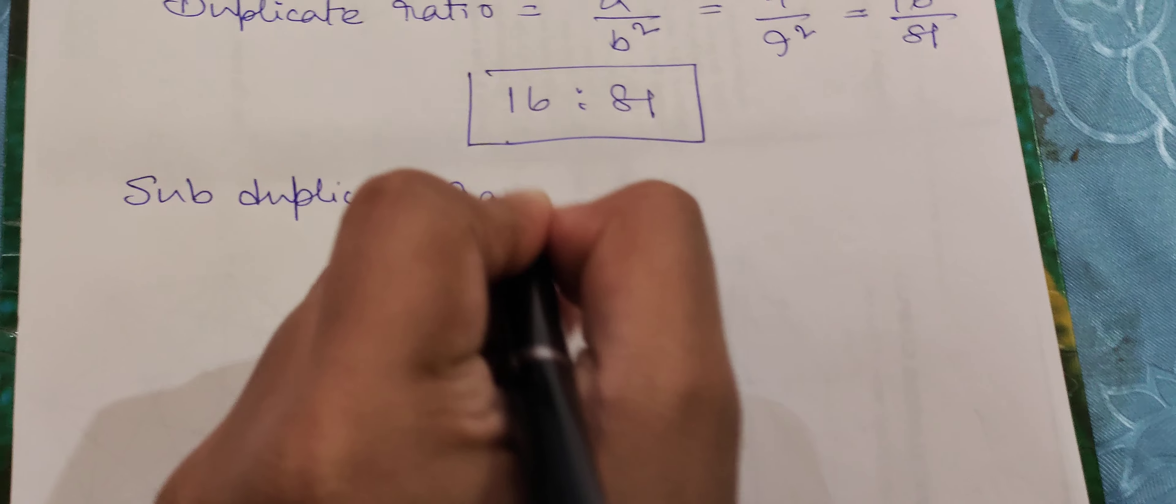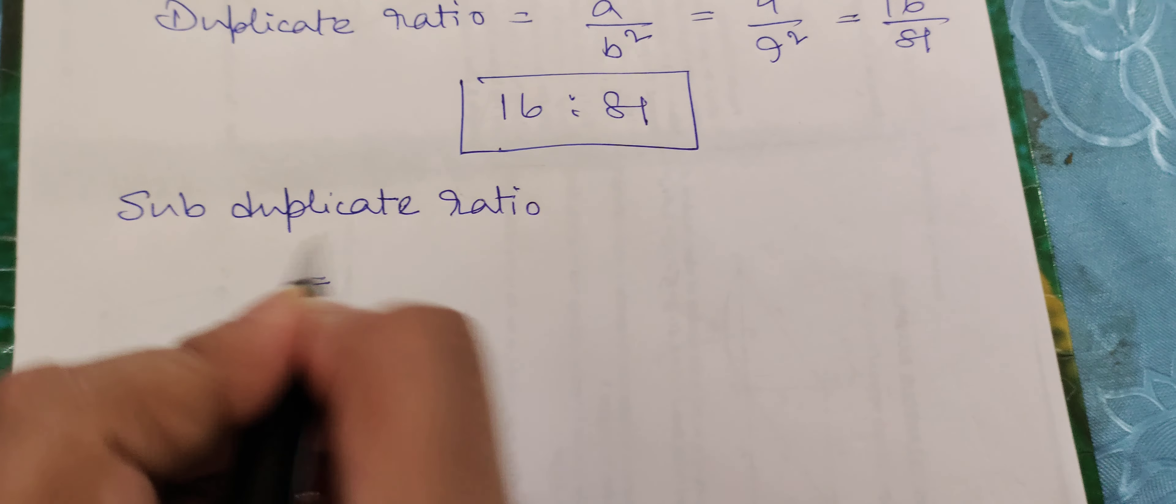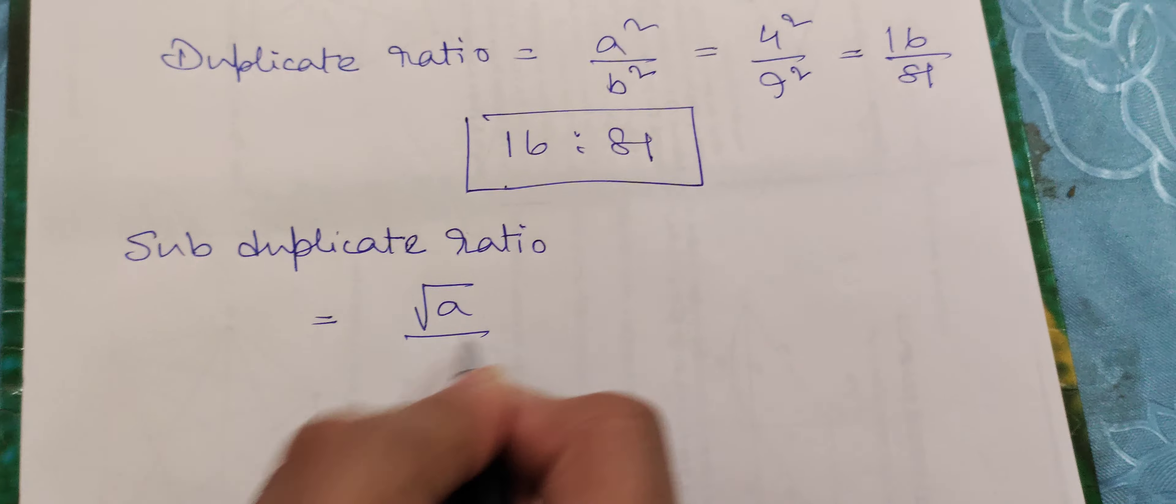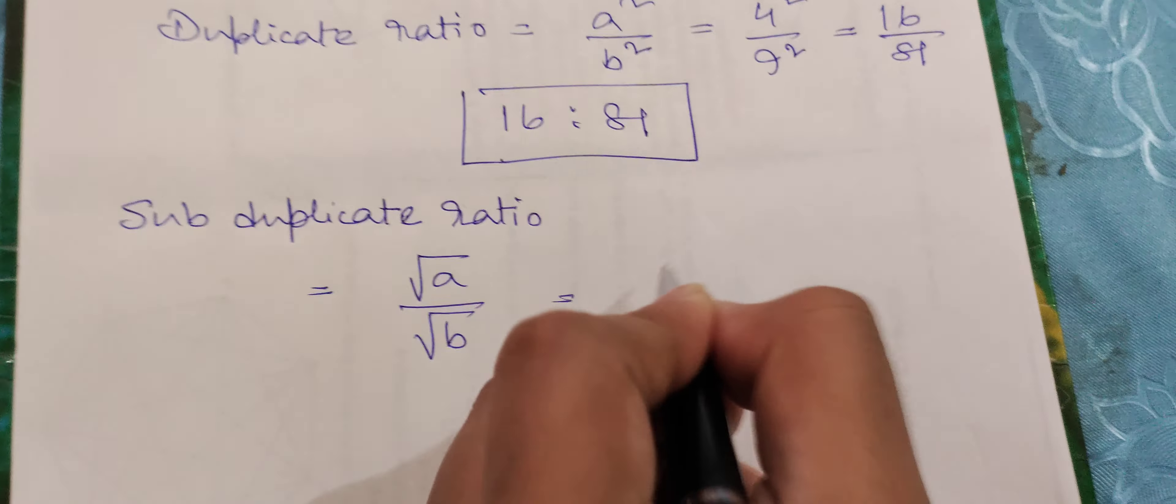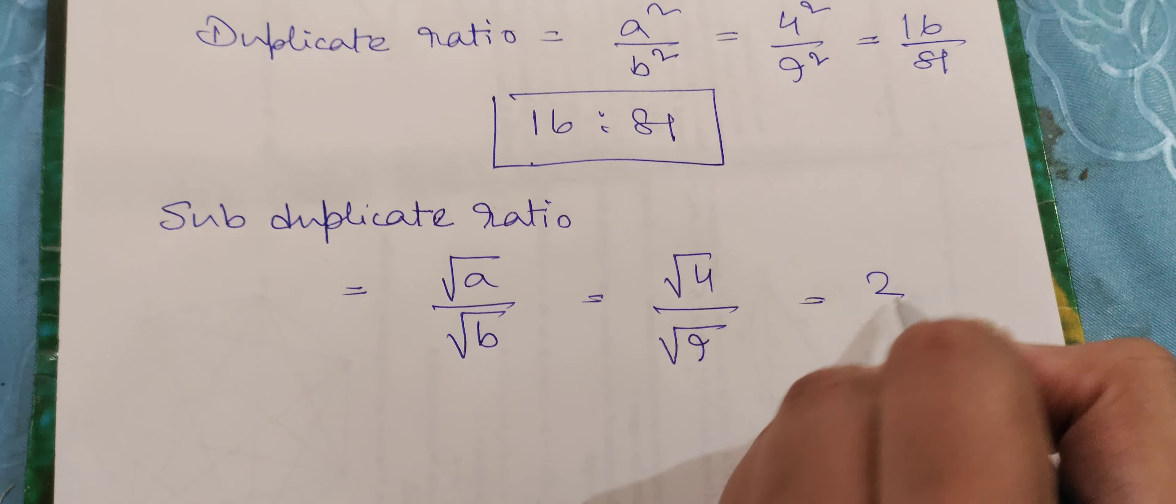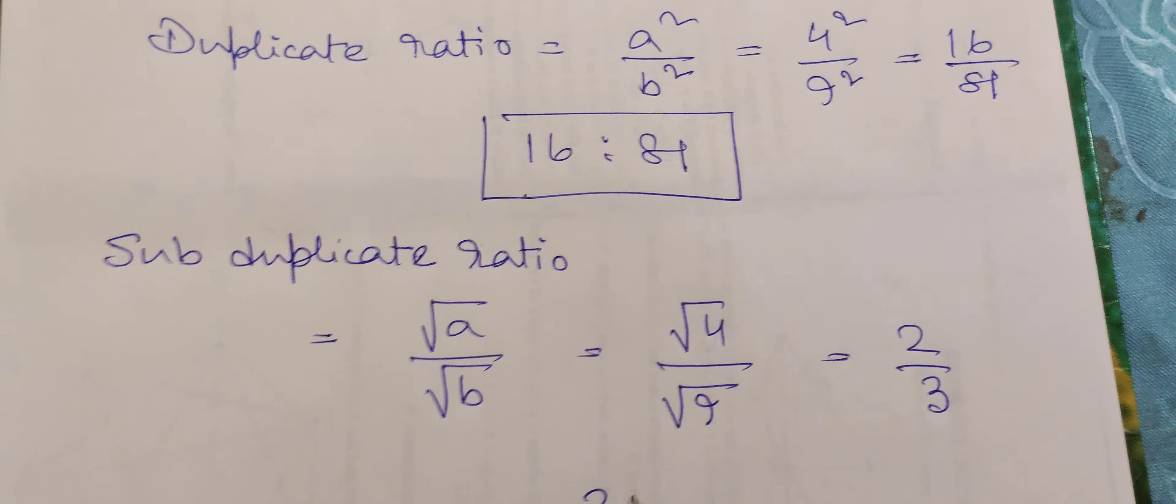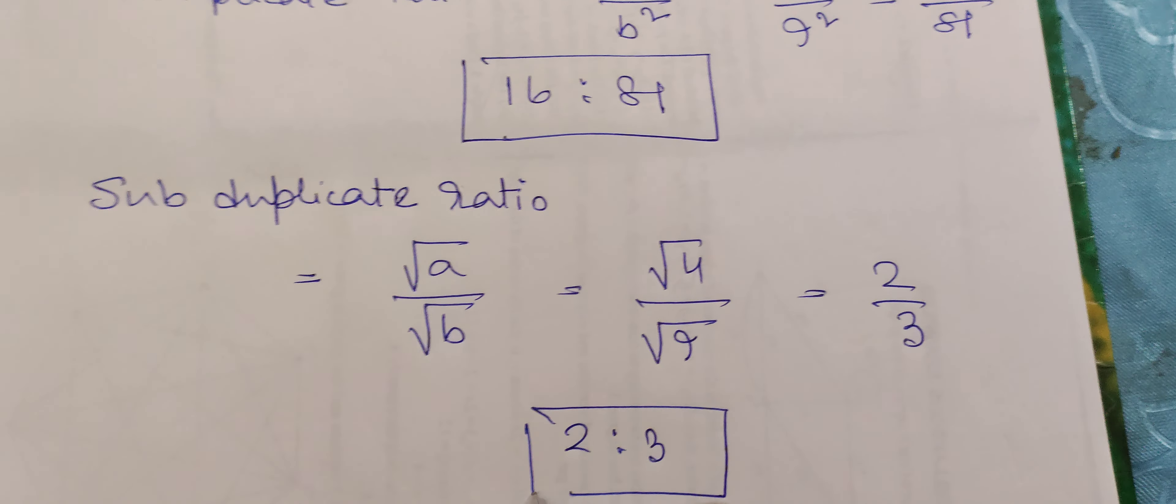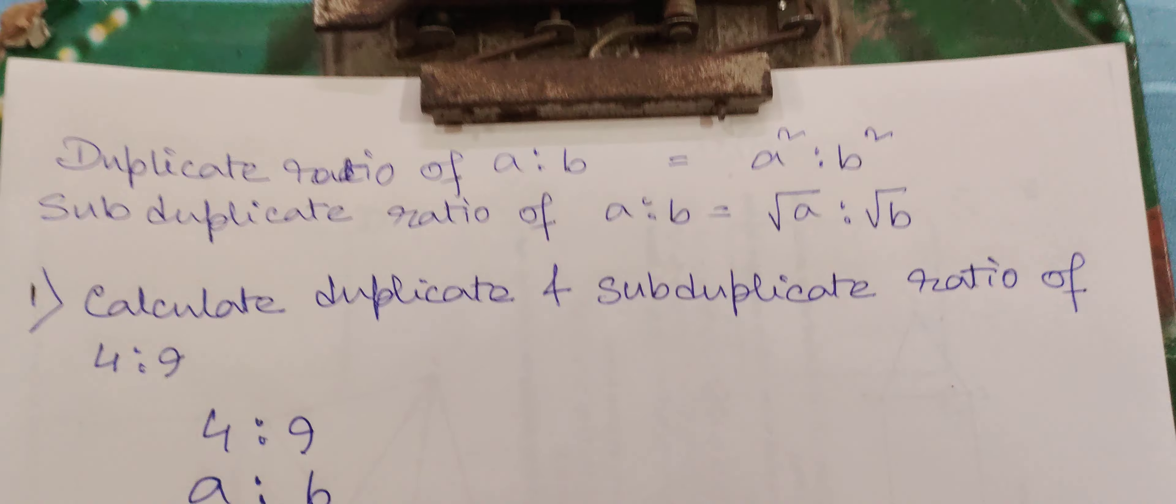Now we have to find the subduplicate ratio. In case of subduplicate ratio we have to square root, so it will be root a by root b, that means root 4 by root 9, which equals 2 by 3. So the subduplicate ratio will be 2 is to 3.